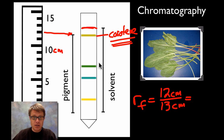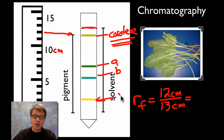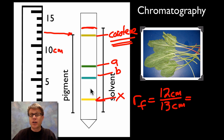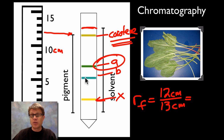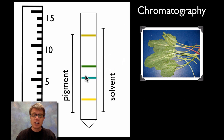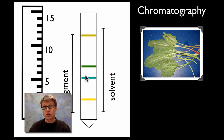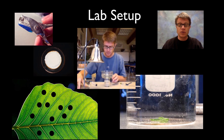Looking at the bands: the first one up top is carotene, then chlorophyll A, then chlorophyll B, then xanthophylls. Using chromatography you can separate the mixture into the different pigments. Remember, chlorophyll A is the key pigment that actually drives photosynthesis; the other pigments can contribute energy to chlorophyll A.